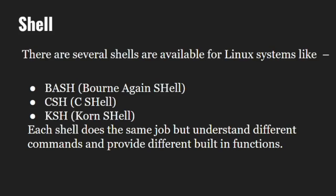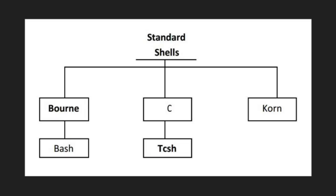The Bourne shell was the base for the POSIX shell standard specifications. The Bourne shell is the oldest, and because it is the oldest and most primitive, it is not used on many systems today. An enhanced version of the Bourne shell called bash is used in Linux.